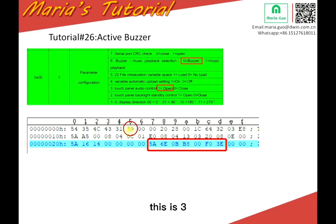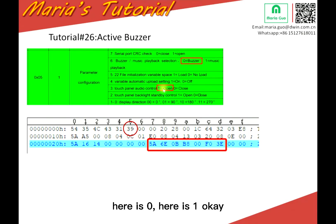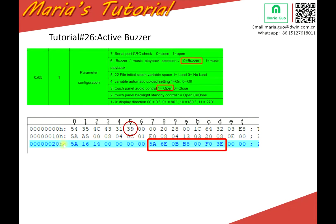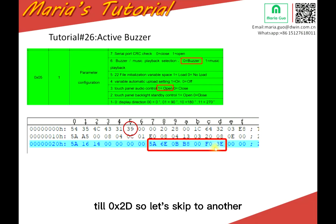This is three, nine, which means here is zero, here is one. I also mentioned other places in the CFG — the third line: 27, 28, tier 20D.